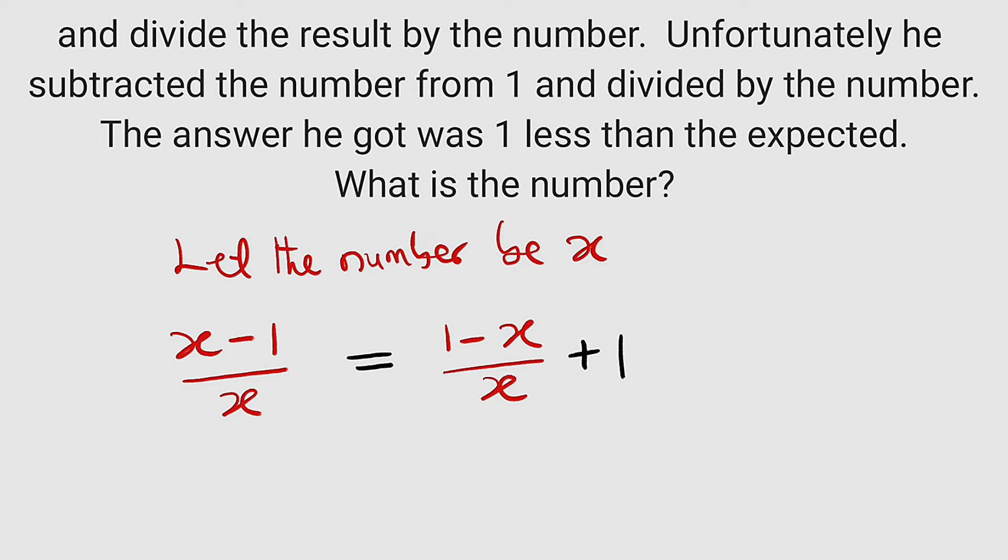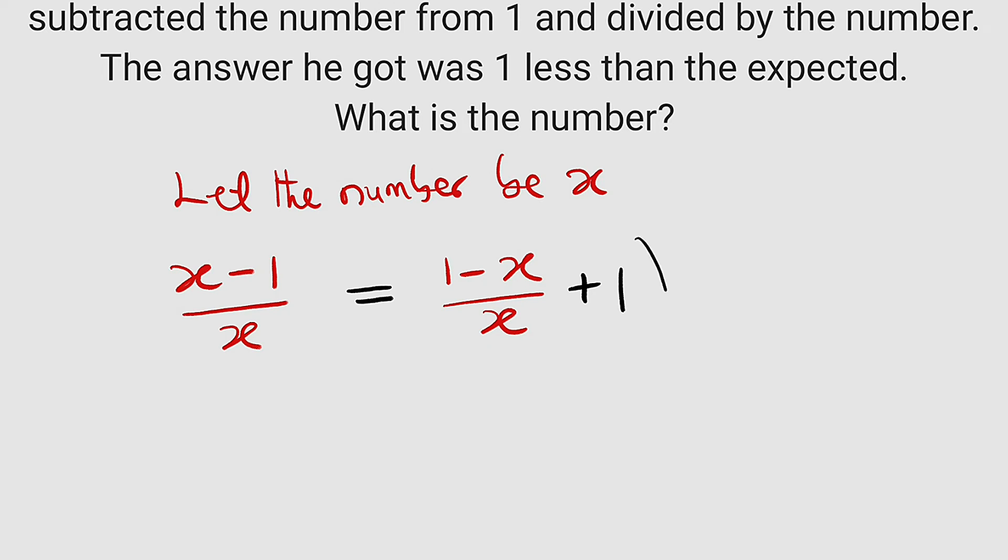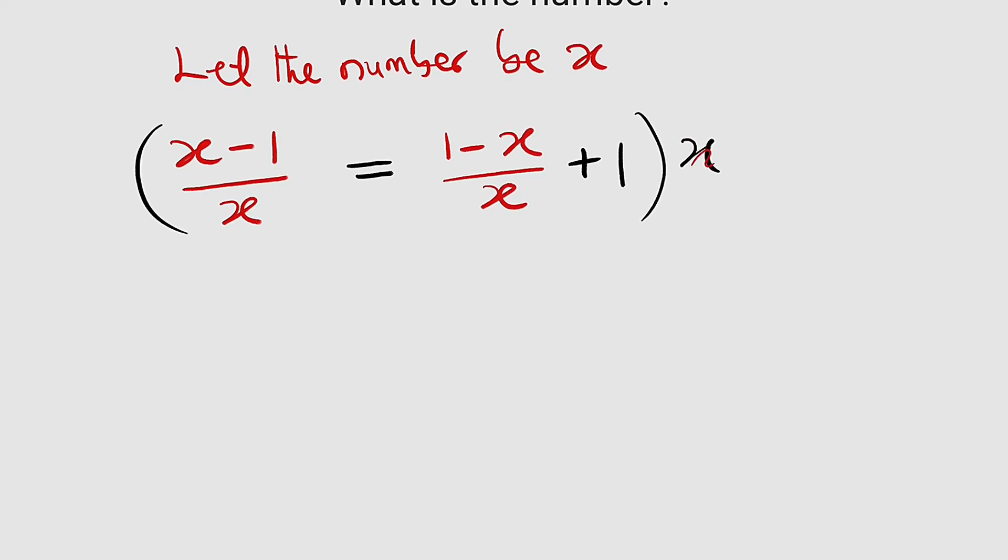Now we have our equation, but note that x can never be equal to zero. Now what we are going to do here is multiply every single term by x in order to clear the fraction. So we multiply the whole of this by x. So this x will cancel, and it has to multiply this by x. So what we have here is x minus 1 equals 1 minus x plus 1 multiplied by x, which is x.